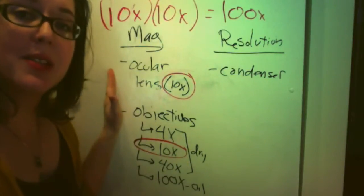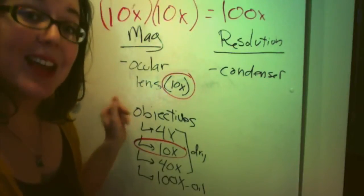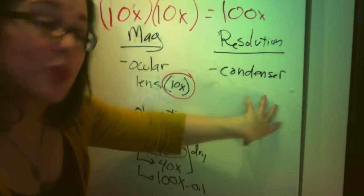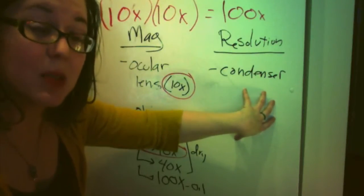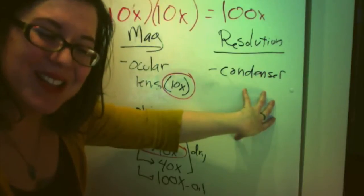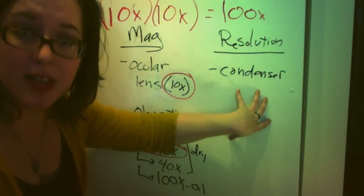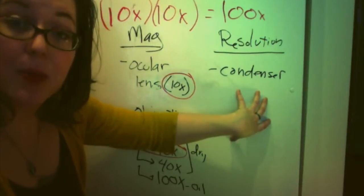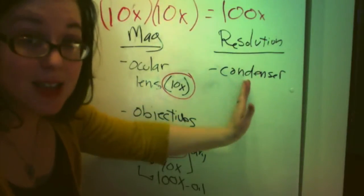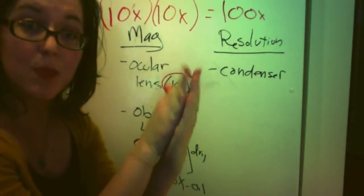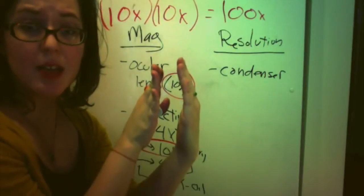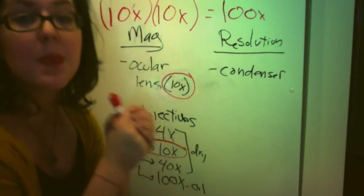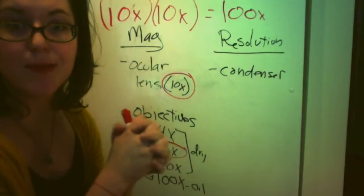So those are the two components, ocular lenses and objectives, that aid in the magnification. Now, resolution, I already have condenser on here, is one of the components that increase the resolution. The distinction is to see two points. The condenser does that because it is a series of lenses that sits right above the illuminator, but below the stage on a microscope. What it does, it concentrates, condenses light, so it is not spread out, that it's focused on the specimen, and so when you see it, you don't see a lot of scattered light.